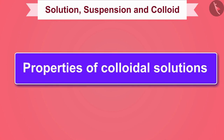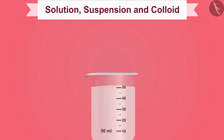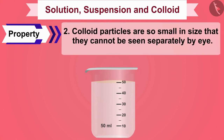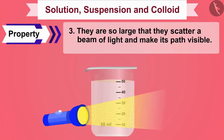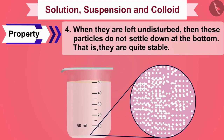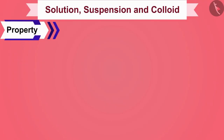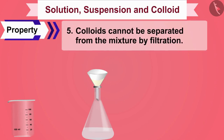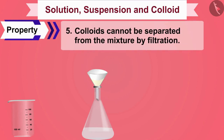The properties of colloidal solutions are: 1. Colloidal solutions are heterogeneous mixtures. 2. Colloid particles are so small that they cannot be seen separately by the naked eye. 3. They are large enough to scatter a beam of light and make its path visible. 4. When left undisturbed, the particles do not settle down — colloidal solutions are quite stable. 5. If we filter this colloidal solution with filter paper, we cannot separate milk and water; colloids cannot be separated by filtration.